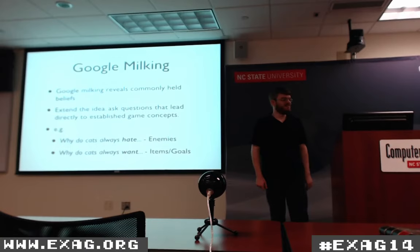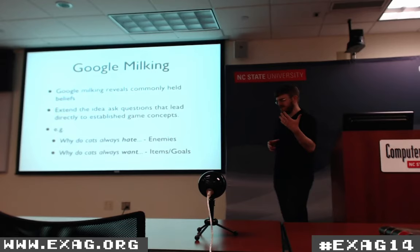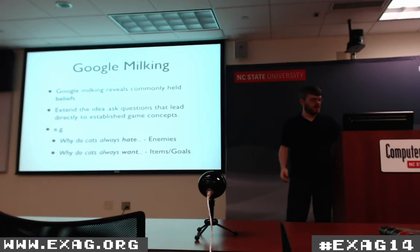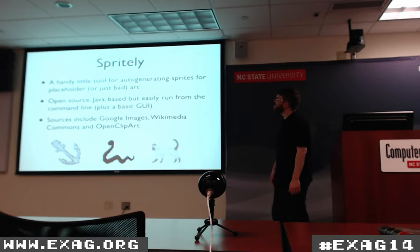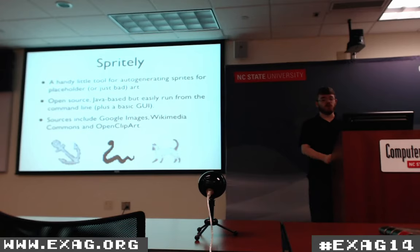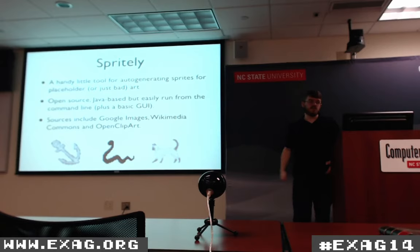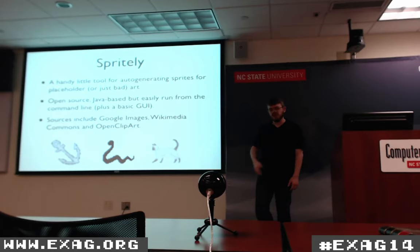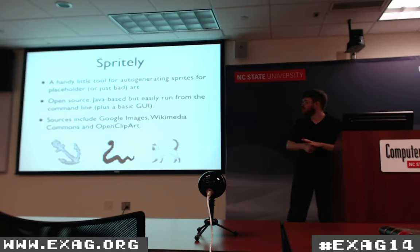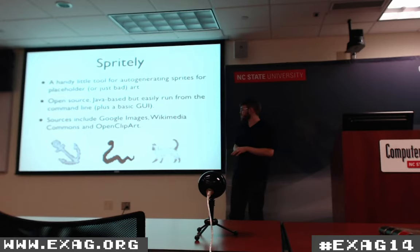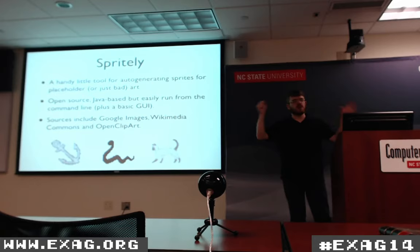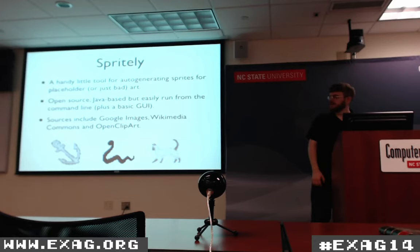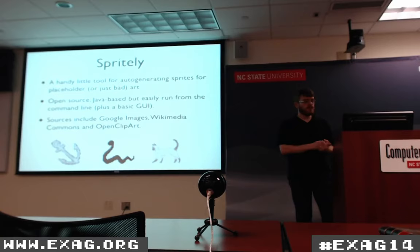A Rogue Dream takes all of these results. It collects the autocomplete part — Google doesn't like you doing it, so you have to essentially steal from them, but that's fine. Then it feeds them into a little tool called Spritely, which is a very basic open-source thing for auto-generating little sprites based on freely available image sources. It's Java-based with a command-line version. It goes to places like Google Images and Wikimedia Commons, takes the word you give it, adds modifiers — like 'cartoon cat' or 'silhouette of cat' — extracts the background, crushes it down to a 32x32 sprite, and optionally recolors it. So the chain is: do some Google milking, feed it through Spritely, and load them into A Rogue Dream.